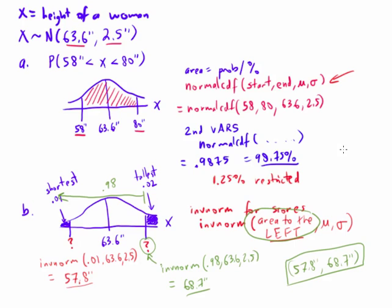So this completes our example, but what it shows you how to do here is you use normal CDF on your calculator to find areas. You use inverse norm to find scores. I'll see you next time.